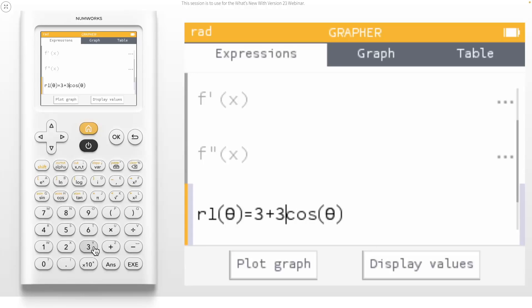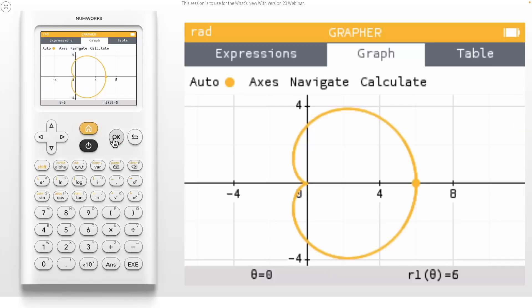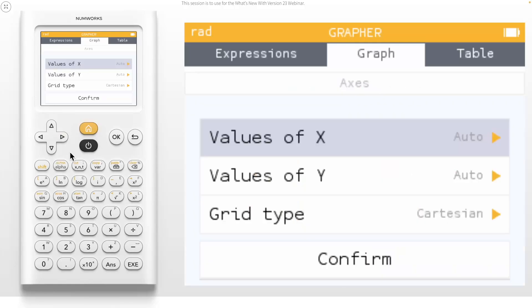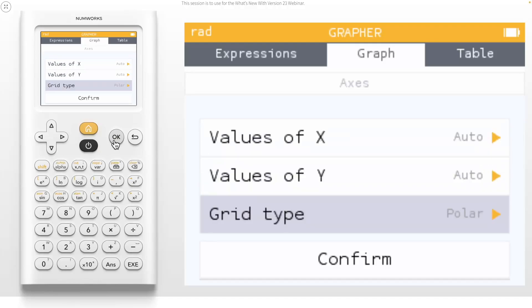Let's create the cardioid R1 of theta equals 3 plus 3 cosine of theta and look at its graph. Arrow up to axes to see some new options about the graph. With version 23, you can now choose to plot your graph on a cartesian or polar coordinate system by changing the grid type. Let's select a polar grid system.